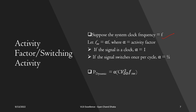Suppose the system clock frequency is F and the switching frequency is α·F, where α is the activity factor. If the circuit is working at frequency F and the signal we are calculating dynamic power for is also switching at frequency F, then F_switch = F and α = 1. But if the circuit works at frequency F and the signal switches once per two clock cycles, then α = 1/2 and P_dynamic = (1/2)·C·VDD²·F. As you can see, dynamic power is directly proportional to the switching frequency and the activity factor α.